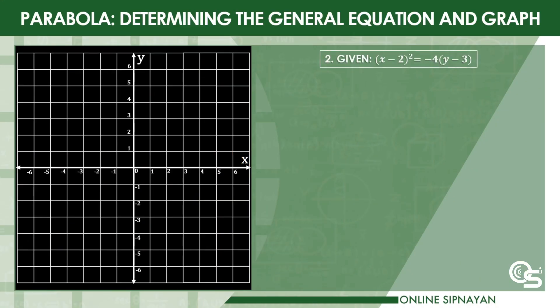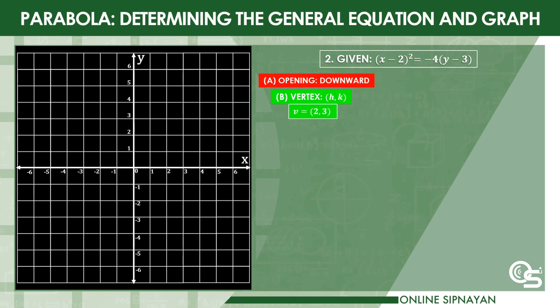Example number 2: given (x − 2)² = −4(y − 3). This example lies under the third case of parabola in the summary table. Observing the given, it will give us an opening going downward since it has a negative focal distance. Next is the vertex. From summary table number 3, vertex is at (h, k). Substituting h and k from the given, we get a vertex at (2, 3).